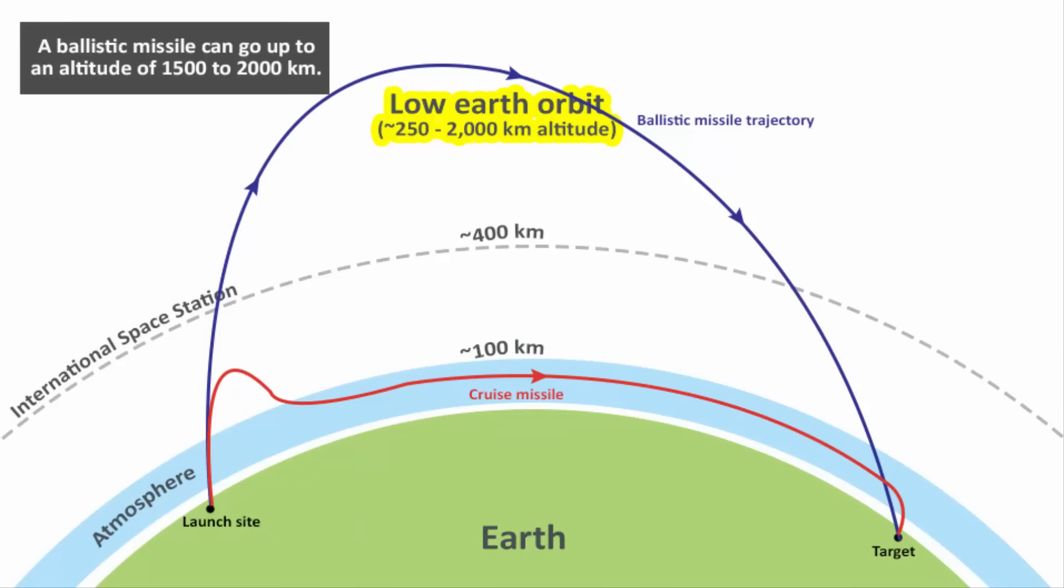A ballistic missile can go up to an altitude of 1500 to 2000 km which is in the lower Earth orbit. This altitude depends on how far is your target. Based on that, a certain altitude will be needed.